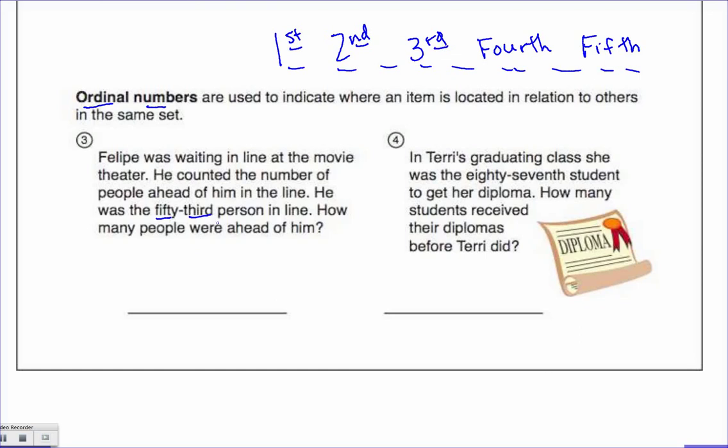If he's the 53rd person, then that means there are 52. Don't forget your label on all word problems: people, P-E-O-P-L-E, people ahead of him.